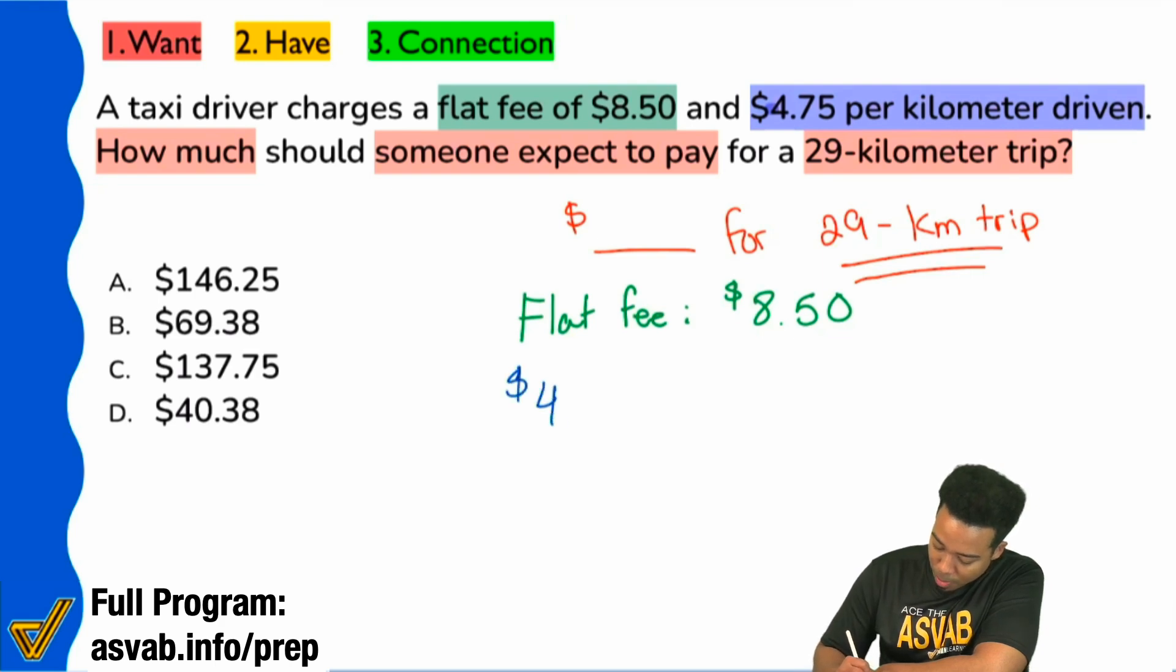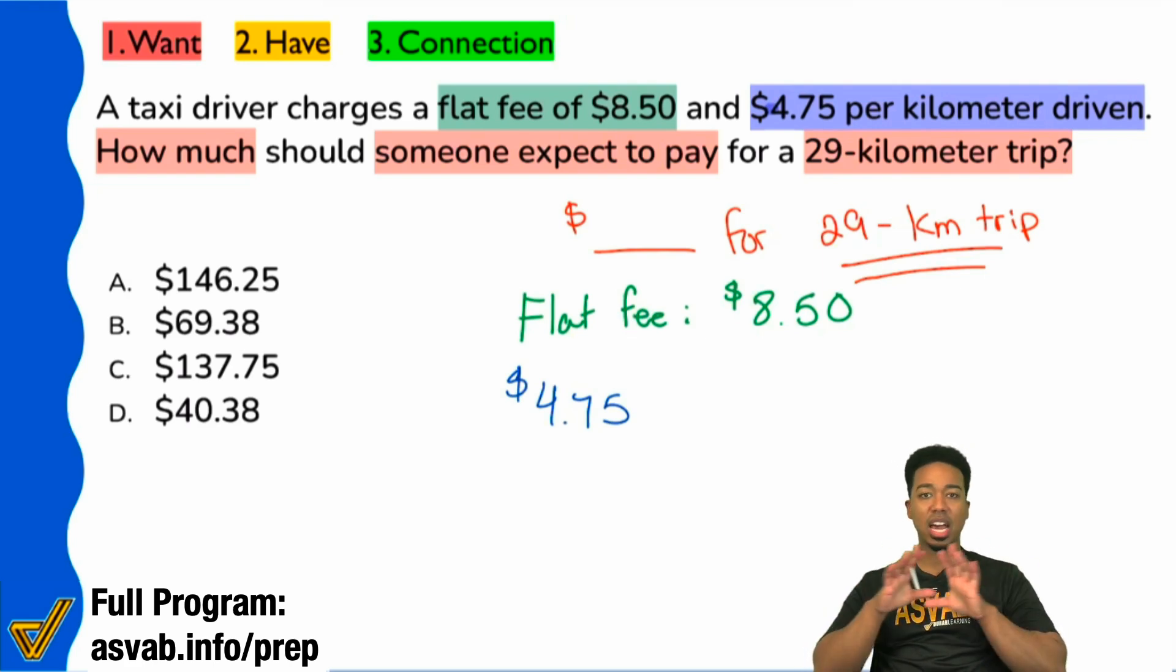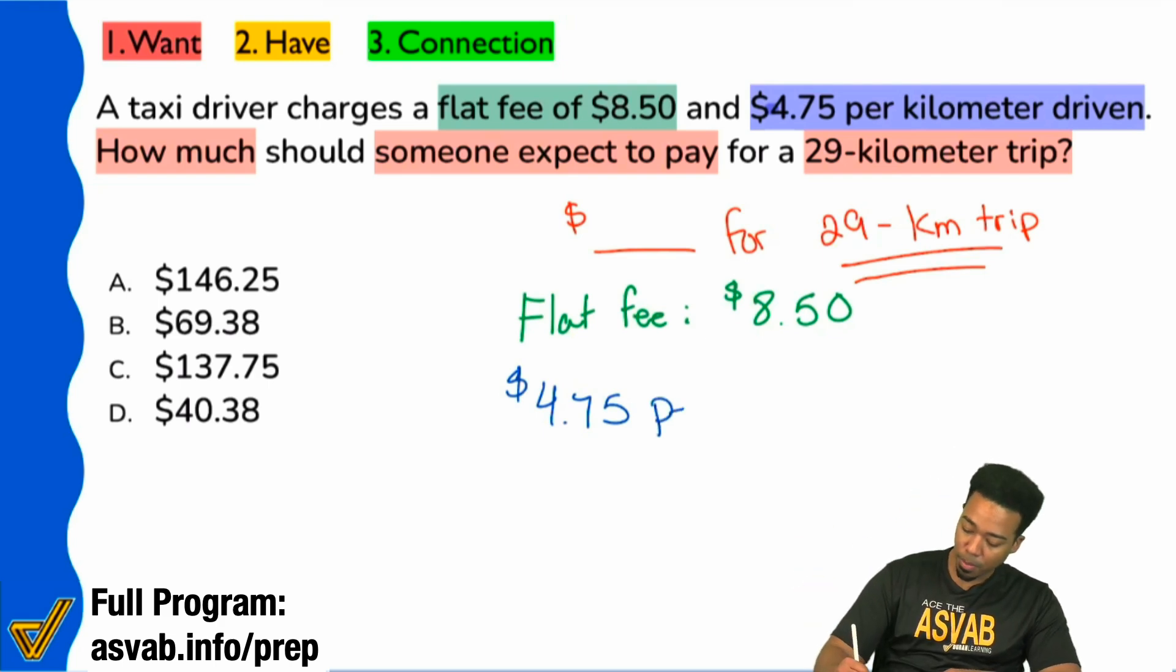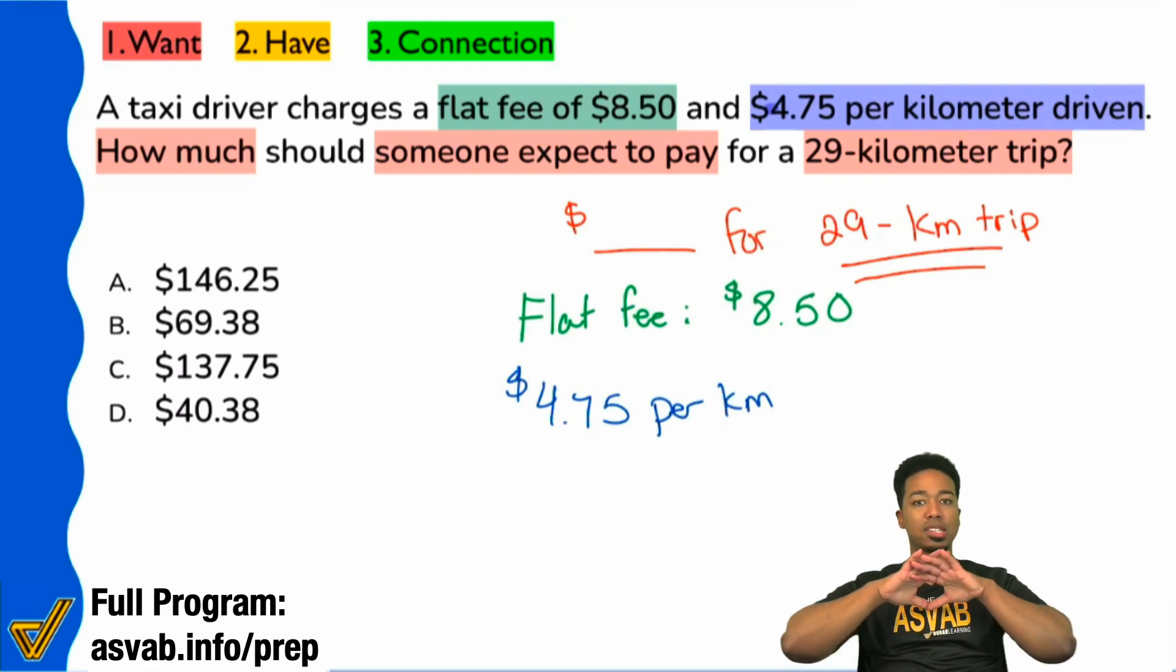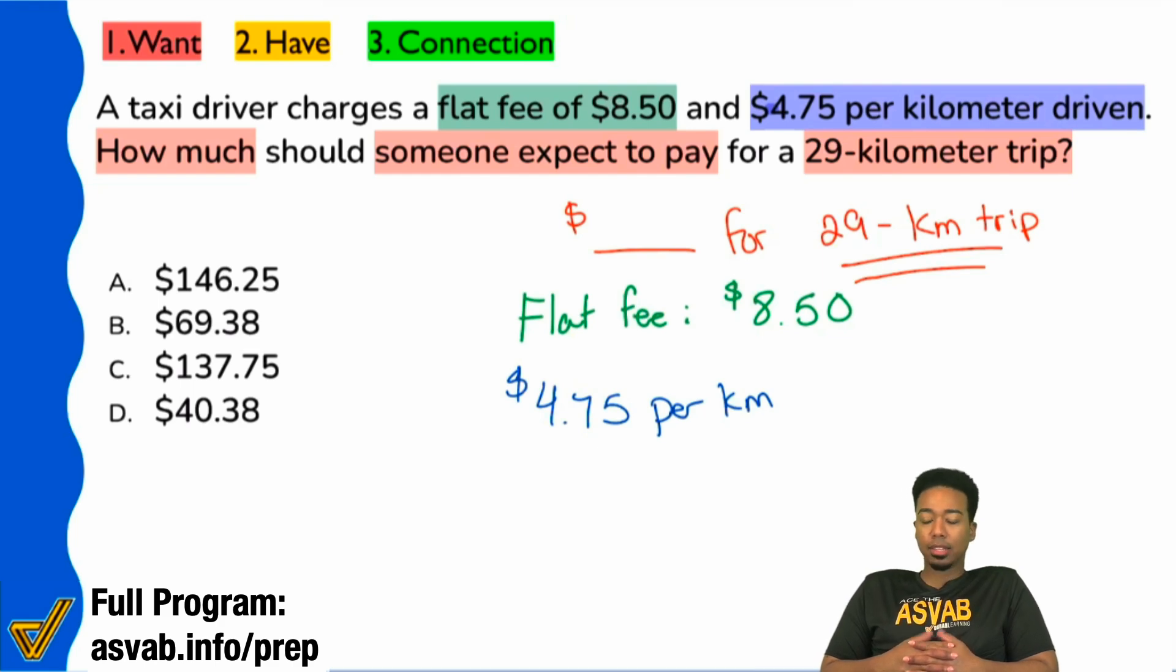So my party people, which one of these is going to stay as a constant and which one of these is supposed to multiply with some other number? So per kilometer, which one of these is going to stay the same? Which one of those numbers? The $8.50, the $29, the $4.75. Which one of these stays the same? Yeah, the $8.50.